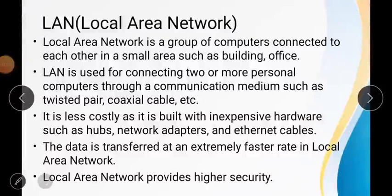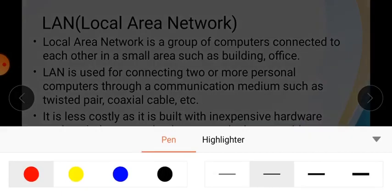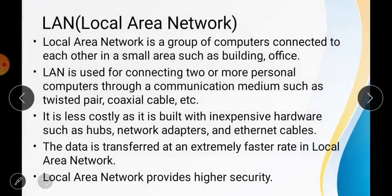The first network I am going to discuss is the Local Area Network. LAN comprises the term 'local,' meaning it covers a nearby area in a smaller distance. For example, a building with one, two, or three storeys — if we want to establish a network in that building, it is called a Local Area Network. The communication medium in this network is twisted pair and coaxial cable.